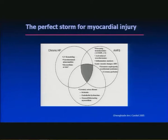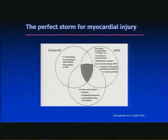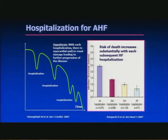This has been termed the 'perfect storm' for myocardial injury. We have chronic heart failure with LV remodeling, neurohormonal abnormalities, and myocardium at risk on a background of coronary artery disease with ischemia and endothelial dysfunction, plus stunned or hibernating myocardium. Acute heart failure syndrome then drives all the pathophysiological changes resulting in myocardial injury. With each hospitalisation there is myocardial and/or renal damage, leading to further progression of the disease.